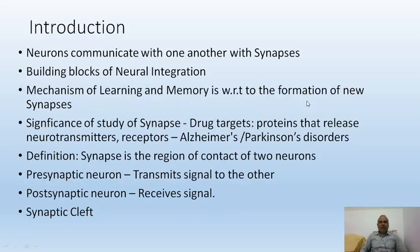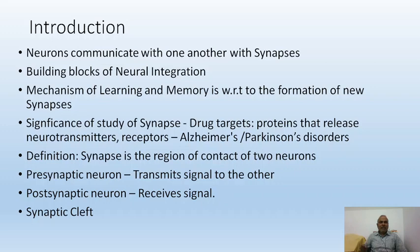Synapse is nothing but a junction between two neurons. The two neurons communicate with one another with the help of a very important structure called synapse. Many authors describe synapse as a small gap between the two neurons. It is a structural gap, but it is a very important functional bridge between the two neurons. Synapses are part and parcel of our nervous system and are very important structures for neural integration.